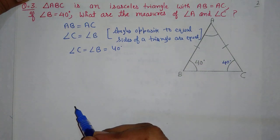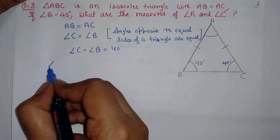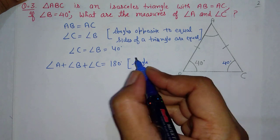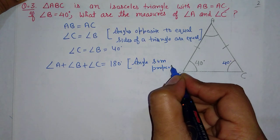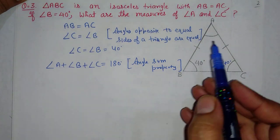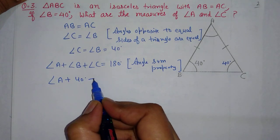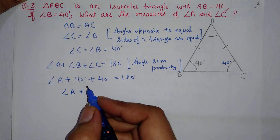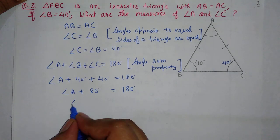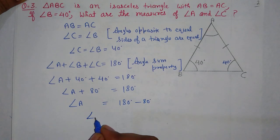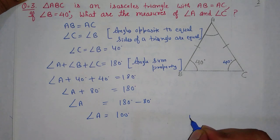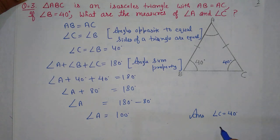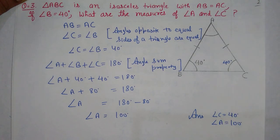Now we know the sum of all three angles in a triangle is 180 degrees. We write: angle A plus angle B plus angle C equals 180 degrees, reason: by angle sum property. Angle A is unknown; angle B is 40 degrees and angle C is 40 degrees. So angle A plus 80 equals 180, therefore angle A equals 100 degrees. Angle C came out to 40 degrees and angle A came out to 100 degrees — these are your answers.